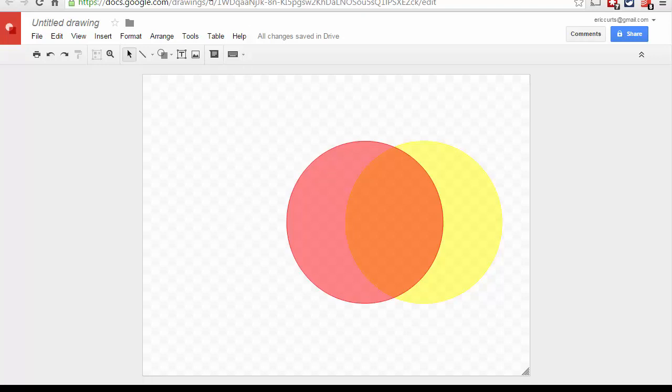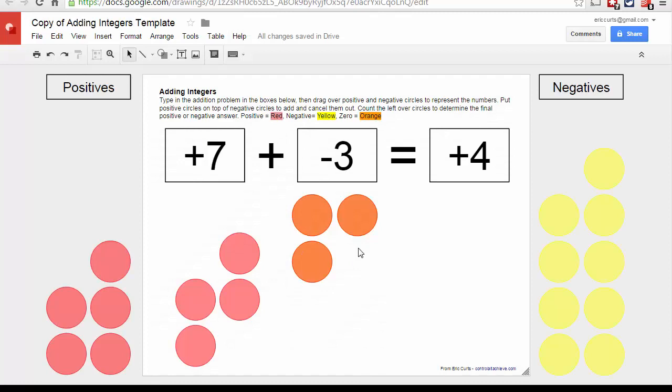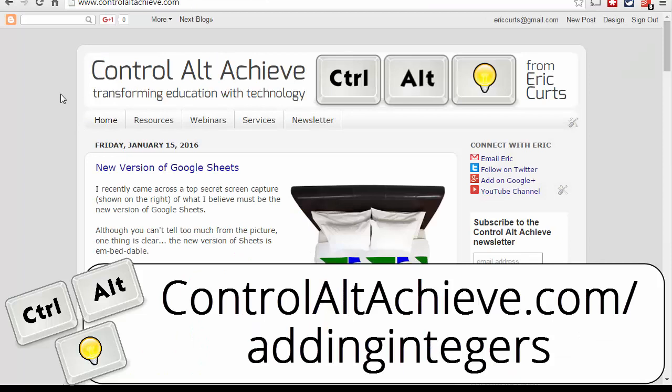Well guys, as a reminder, all of this information, a blog post explaining this in detail, as well as the template that you can freely make a copy of and use however you want, can all be found on my website, CtrlAltAchieve.com. Specifically, go to CtrlAltAchieve.com/adding-integers to jump right into the blog post and to be able to download that template from there.